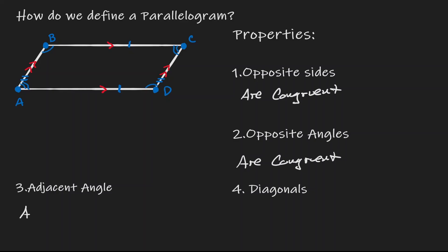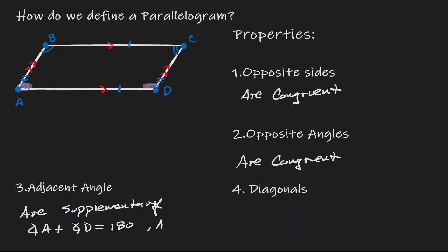Adjacent angles are supplementary. What that means is that if we take angle A and add angle D — which are adjacent, within the same line, next to each other — they will be equivalent to 180 degrees. The same goes with angle A and angle B. They are adjacent, and if we add them up, it's 180 degrees.